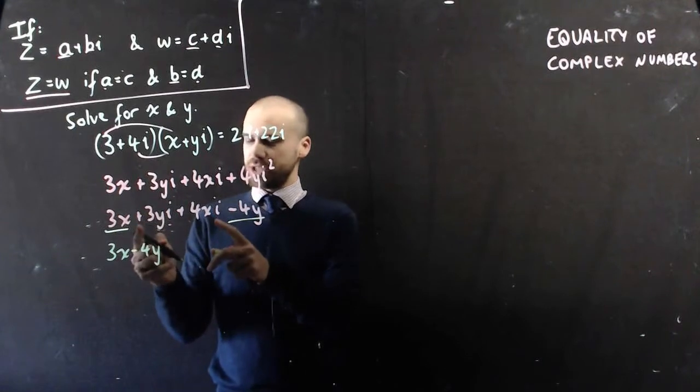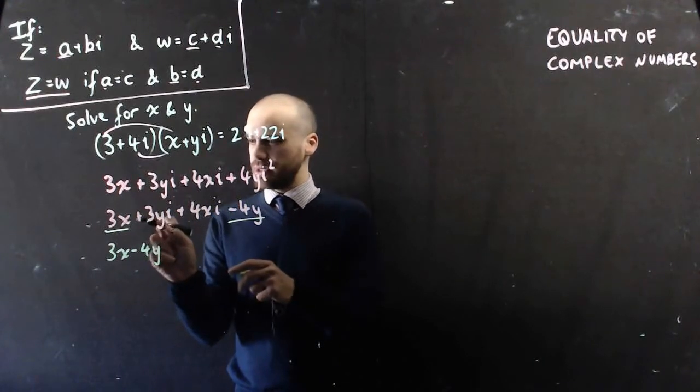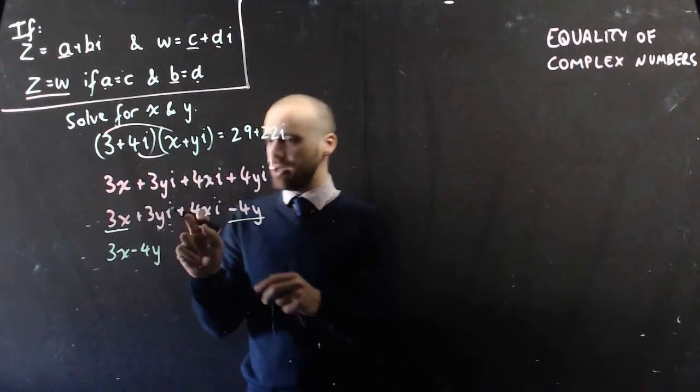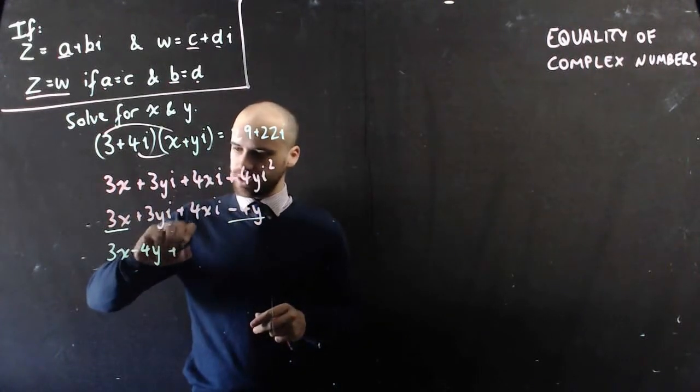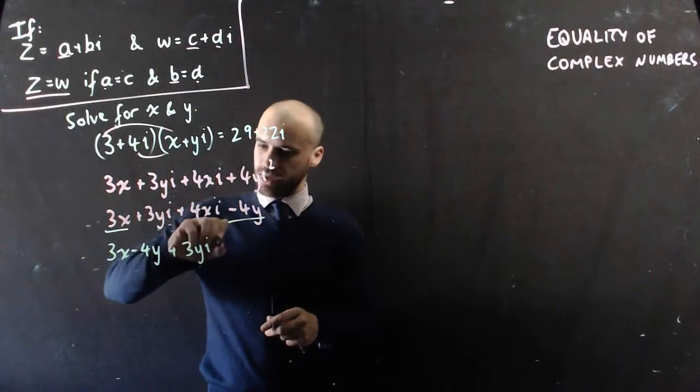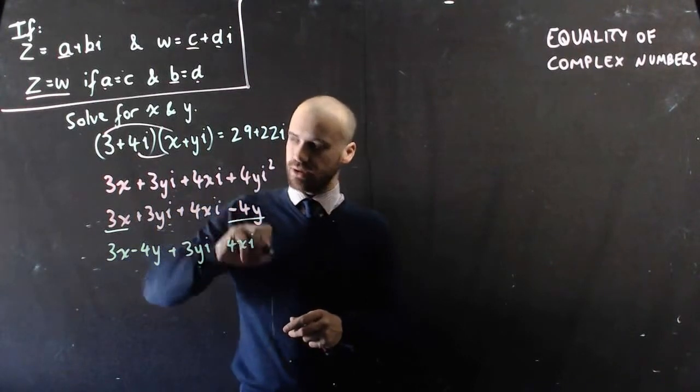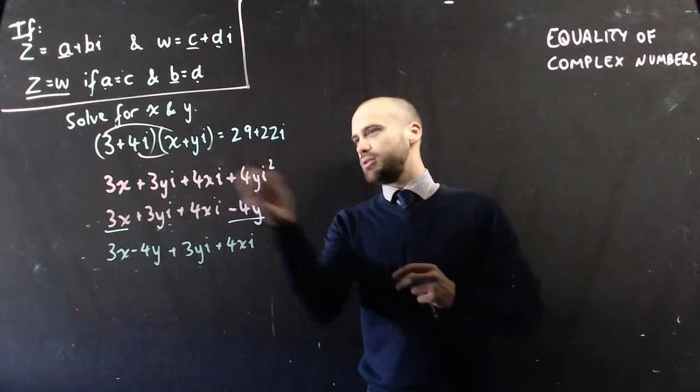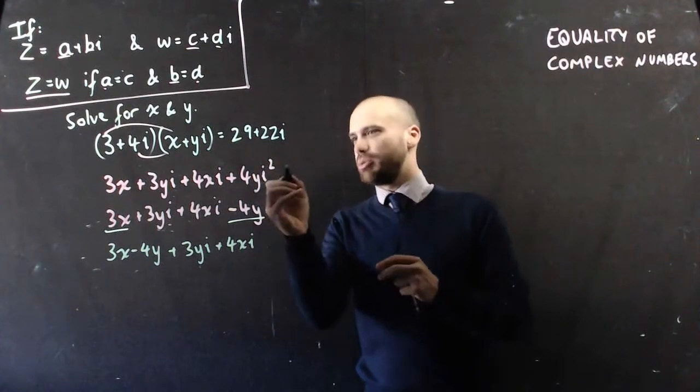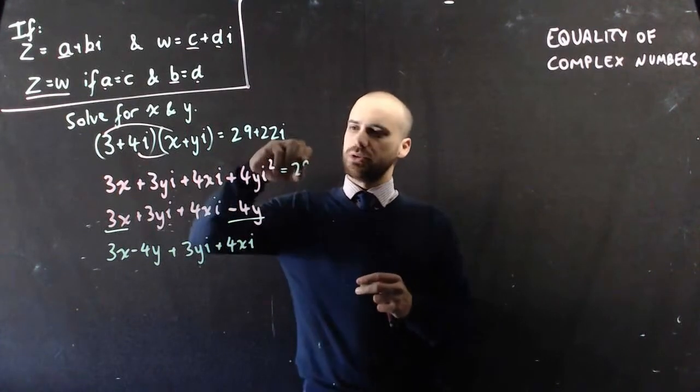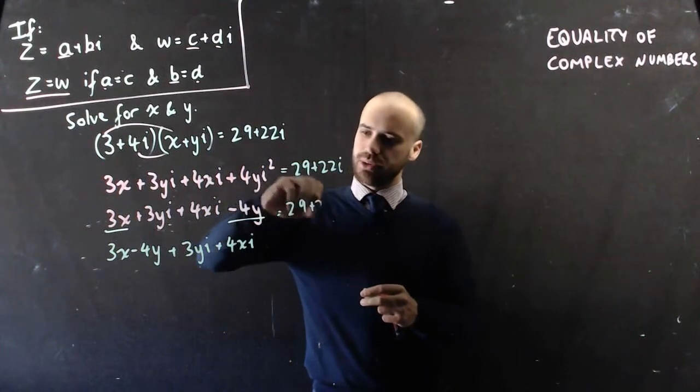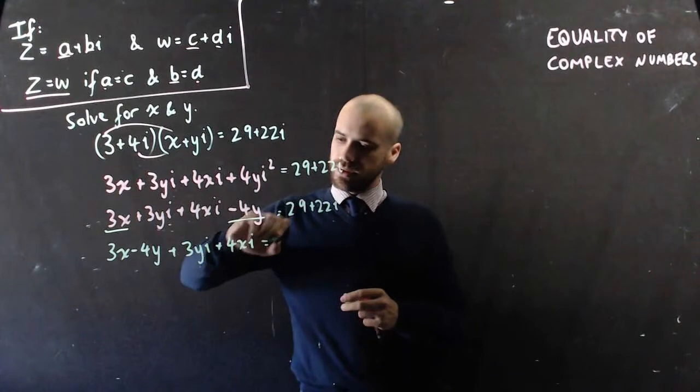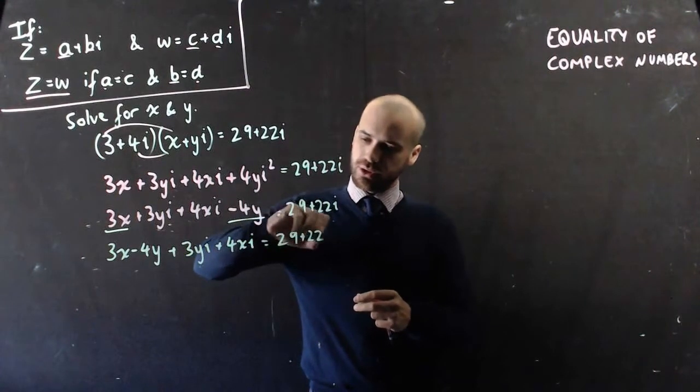And then this is my imaginary component. Number times a number times i plus a number times a number times i. So + 3yi + 4xi. And I should have been doing this all along, equals 29 + 22i.